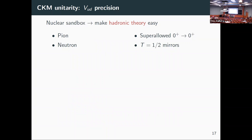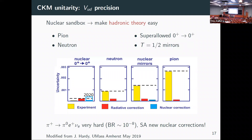For 0⁺ to 0⁺ decays, by the Wigner-Eckart theorem, only very few operators can enter the decay rate since you need to couple spin-zero to spin-zero — making the theory part easy. Mirror decays also simplify a lot of the nuclear structure due to an underlying symmetry. Looking at the experimental situation — a graph by John Hardy — we have these four different candidates lined up for how well they do in extracting Vud.